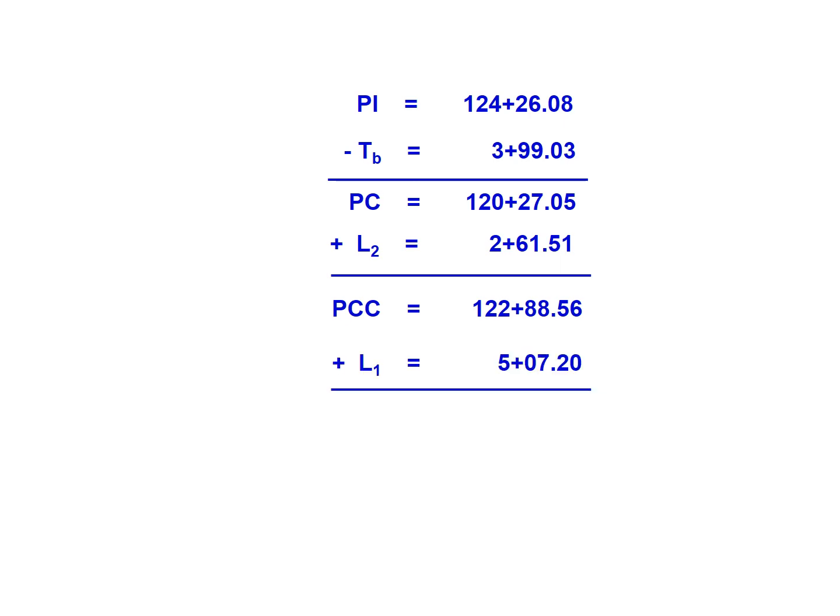Now we're going to add the length of the second curve, which is the larger curve known as L1 in this case, 5 plus 07.20, will give us the PT station of 127 plus 95.76 for our answer.